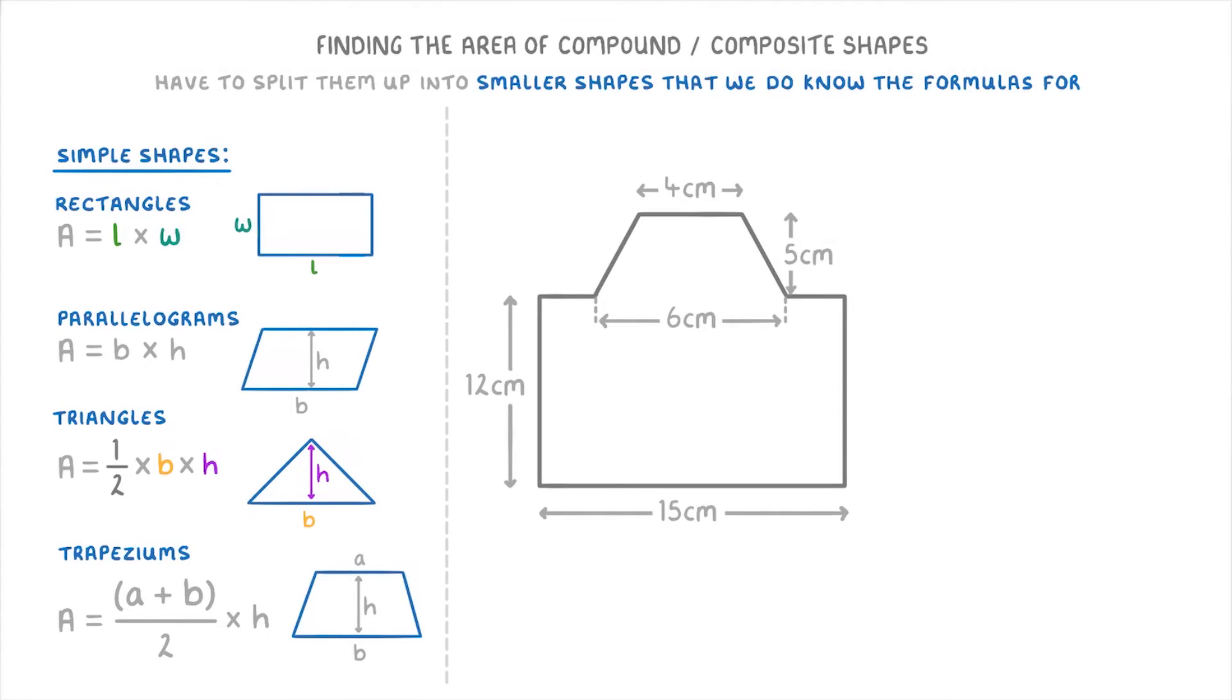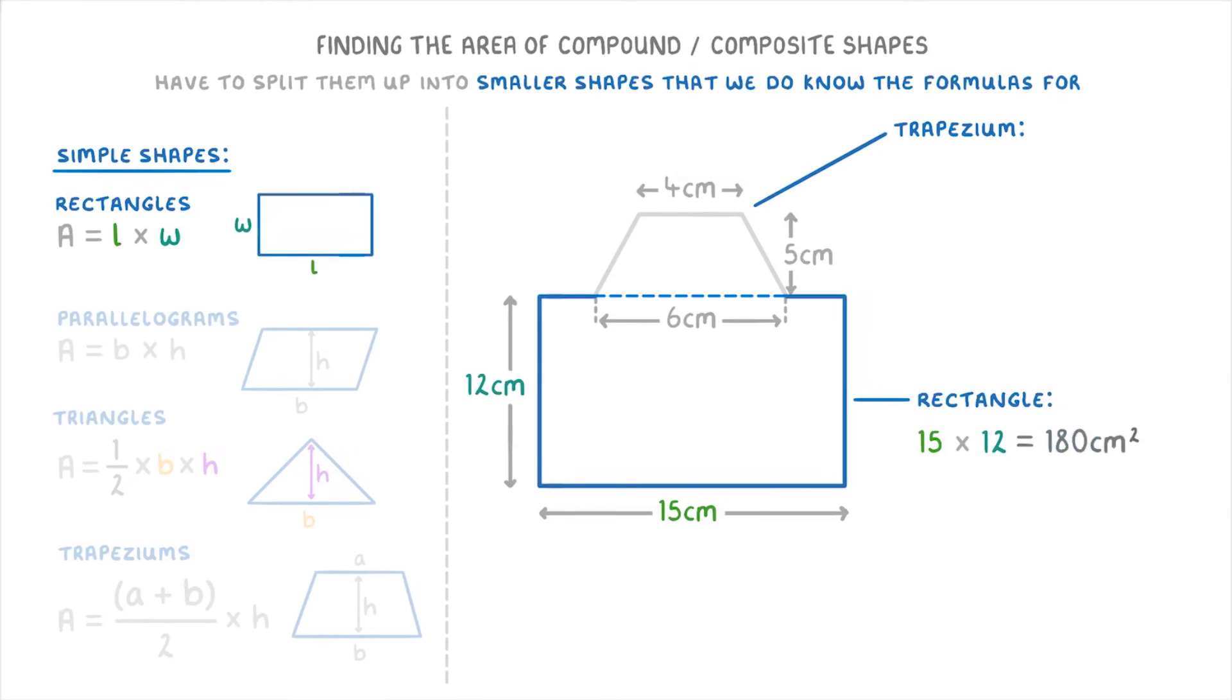If you look at this next one, you can see that this bit at the top is sort of sticking out a bit. And so to make it easier for ourselves, we can just cut that bit off with a horizontal line along here. And we're now left with a big rectangle at the bottom and a small trapezium on top. To find the area of the rectangle, we just do length times width again. So 15 times 12, which is 180 centimeters squared.